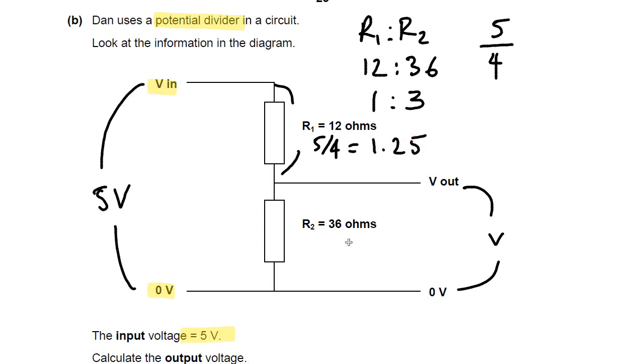So what's left over would be 3, the 3 shares of 5 volts. So that is 3 times 5 over 4, or 15 over 4, if you like. And that 15 over 4, if we do that in the calculator, is 3.75. The answer to this question is 3.75 volts. Okay, I hope that helped.